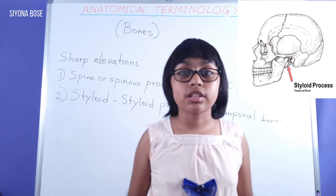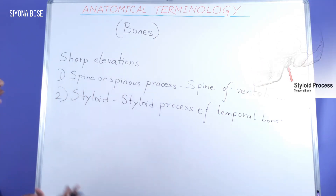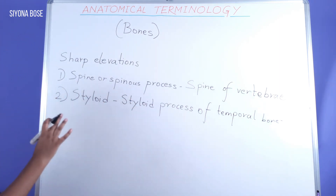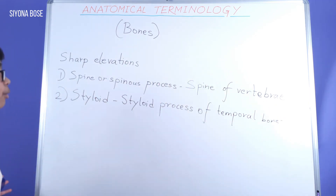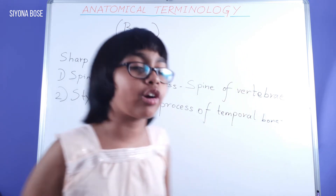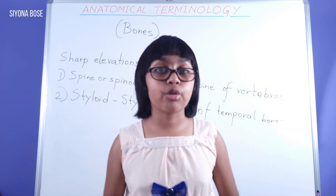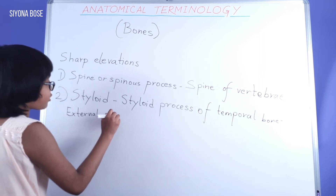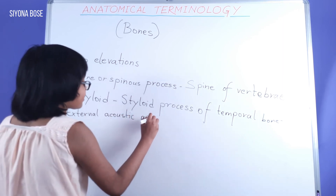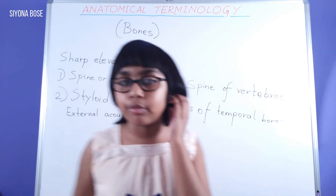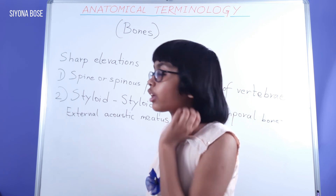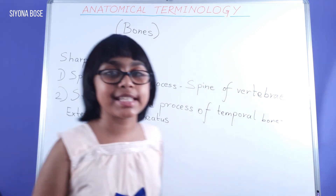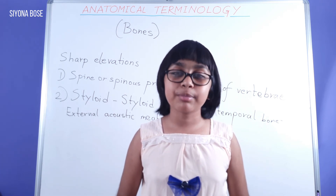The word process here means a kind of projection or structure. The styloid process of the temporal bone is a spiny projection at the temporal bone, which is at the side of the skull approximately on top of the ear. We can understand the position of the temporal bone by knowing the position of the external acoustic meatus — the ear opening. The styloid process is one of the sharp elevations there.